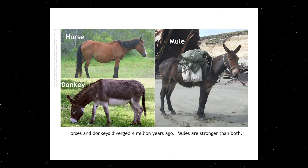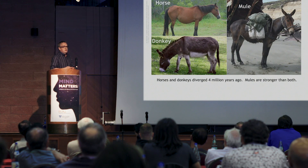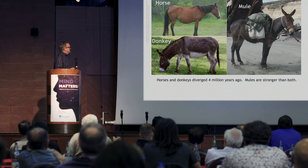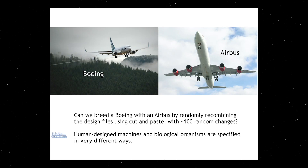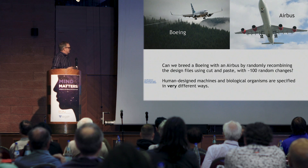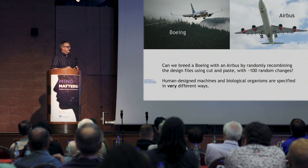There must be something very special about the encoding specifications in the genomes of sexual organisms. Consider another wonderful fact: horses and donkeys are believed to have diverged at least four million years ago. If you breed a horse with a donkey, you reliably get a mule. Horses and donkeys actually have different numbers of chromosomes, and mules are both stronger and reputed to be more intelligent than both. Can we do the same with our own artifacts? Here is a Boeing and an Airbus — we would breed them by randomly using cut and paste to recombine the designs and then adding about a hundred random errors. The point is that human-designed machines and biological organisms are specified in exceedingly different ways.